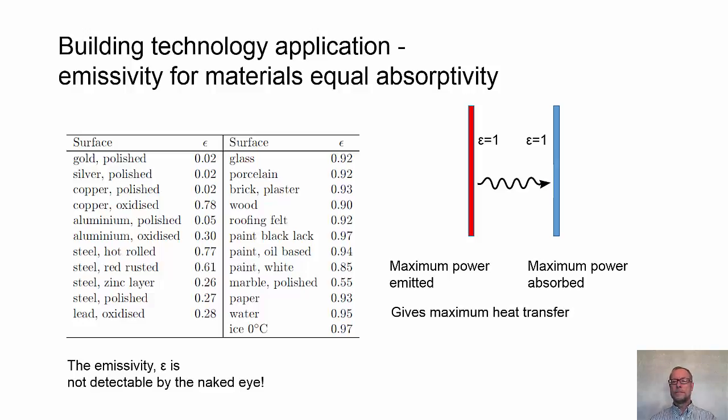To the right here we see two surfaces, like say two glasses in a two-pane window, with both emissivity above surfaces, the warm and the cold surfaces equal to one. Then we have the case when the warm surface emits maximum power, and the cold one emits maximum power as well, so this gives a maximum heat transfer.